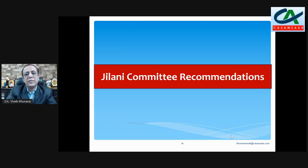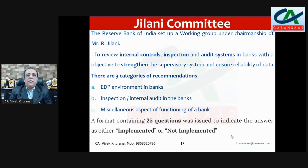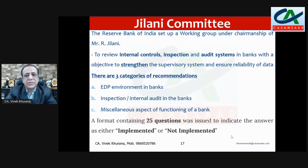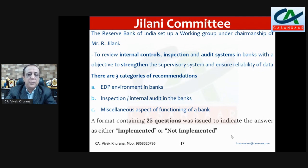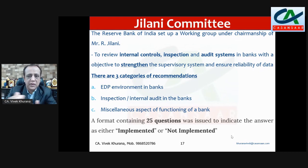Next, the Jilani Committee recommendations. The Jilani Committee was formed by the Reserve Bank of India under the chairmanship of Mr. R. Jilani. Their area was to review internal control, inspection, and audit systems in the banks with the objective of strengthening the supervisory system and ensuring reliability of data. There are three categories of recommendations: ADP environment in the bank, inspection and internal audit in the banks, and miscellaneous aspects of the functioning of banks. They recommended 25 items in total, of which 10 are at the branch level — you have to mention implemented or not implemented.